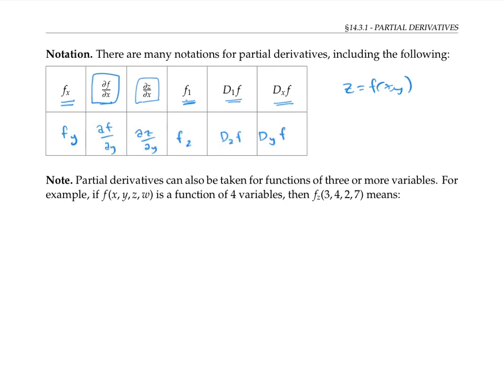Partial derivatives can also be taken for functions of three or more variables. For example, if we have a function of four variables, f(x,y,z,w), then we can take the derivative in the z direction, that's the third direction. And that means that we hold x, y, w constant, and we take d/dz of f(3,4,z,7), evaluated when z is 2.